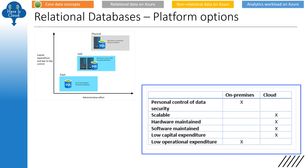What is the difference between on-premises and cloud? On-premises gives you personal control of data security. Cloud is more scalable. Hardware and software are maintained in the cloud. Low capital expenditure is a cloud advantage because you don't spend a lot of money upfront. Low operational expenditure is an on-premises advantage — once you invest the money, the operational expenses on premises are less compared to cloud. Remember these points, as there could be questions around that.